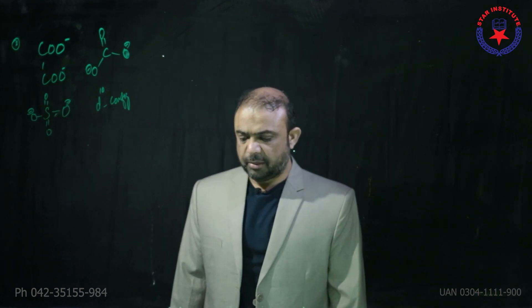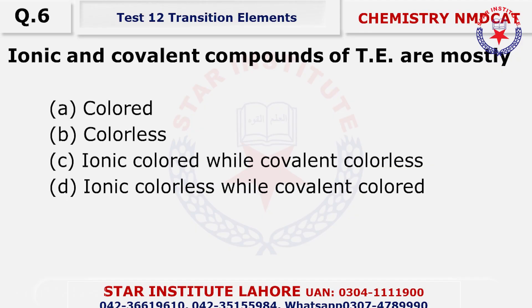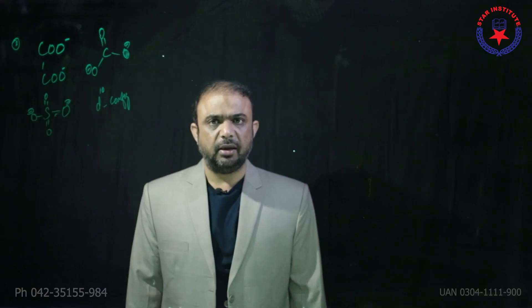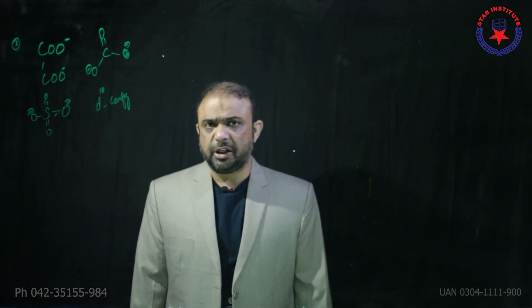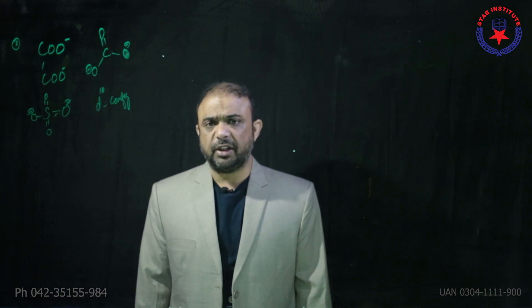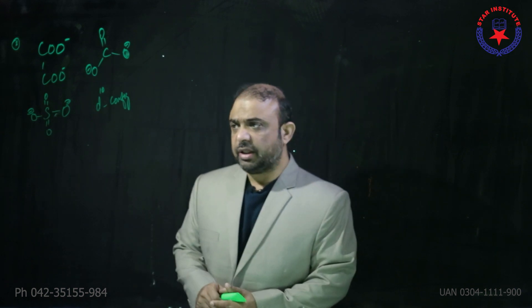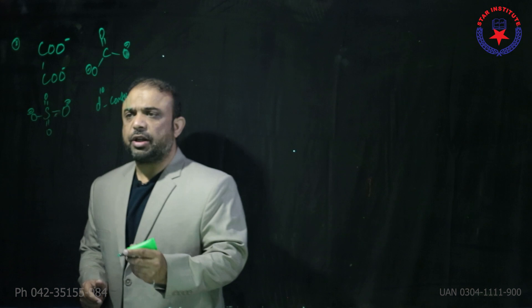Question number six: ionic and covalent compounds of transition metals are mostly colored. You all know that not only the transition metals, even their compounds are colored, so the choice is alpha.